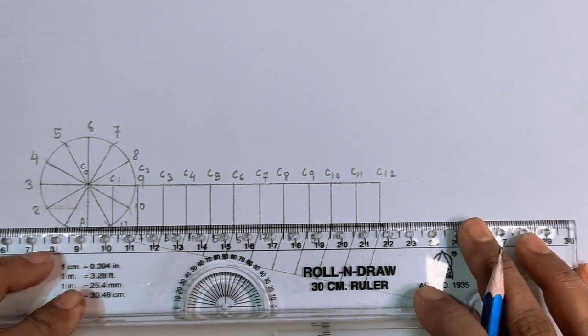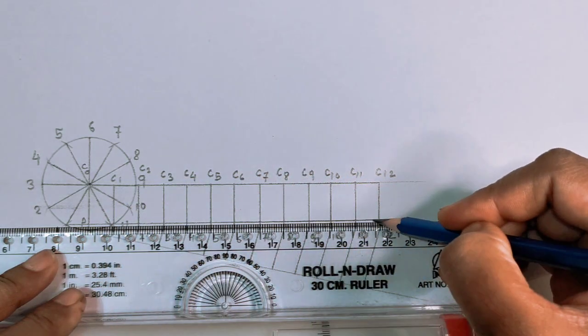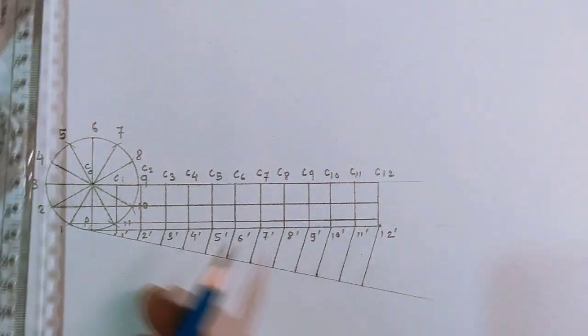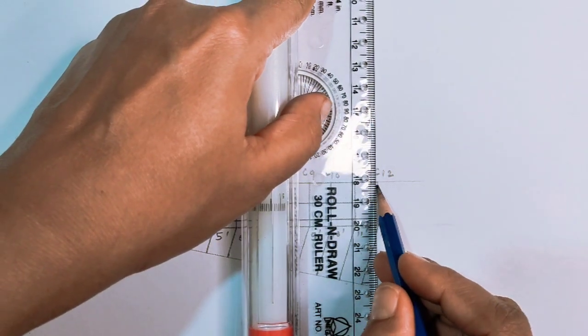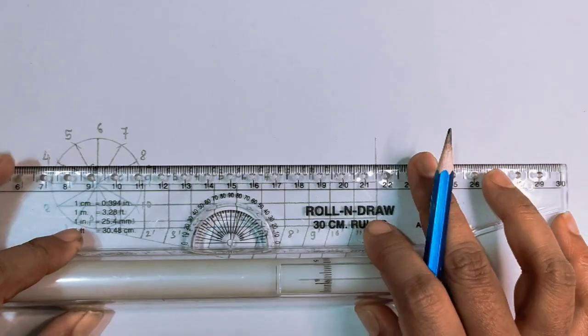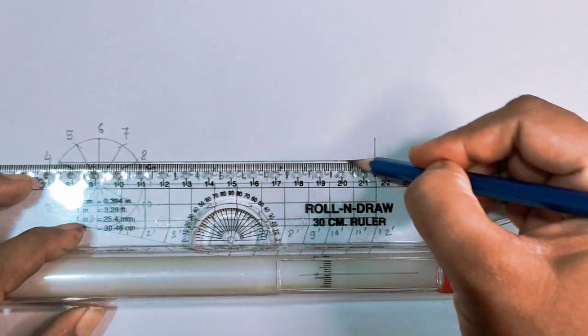Next, draw a horizontal line which is passing through points 1, 2, 3, 4, 5, and 6. We are assuming that the generating circle completes one revolution in 12 steps - that's why we divided the circle into 12 parts.